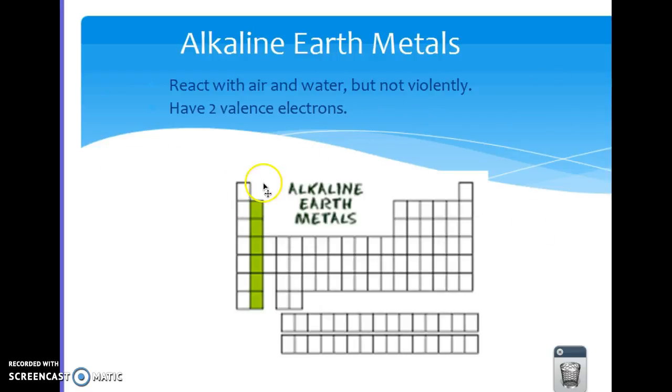Your alkaline earth metals, family 2 here, they also react with air and water, but not violently like their cousins. They have two valence electrons, so can you guess what group they would like to react with? You're right, it would be family 16, because then if they had two more they would have a full outer shell.